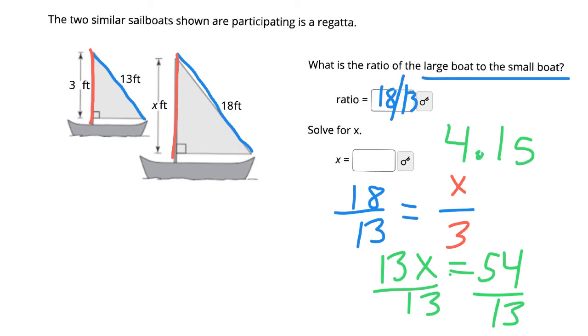So just a couple of key things to keep in mind: when you set up your proportion make sure that you're consistent. If you choose to put the bigger figure in the numerator, make sure you do that for both fractions and then likewise you would put the smaller figure in the denominator for both fractions. Another thing to keep in mind is that after you set up your proportion you should be able to cross multiply to solve for a missing side length or to solve for a variable. Good luck!